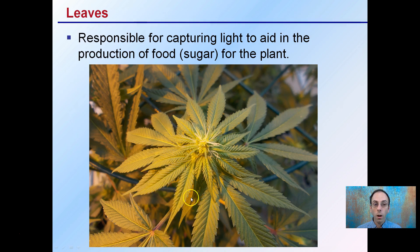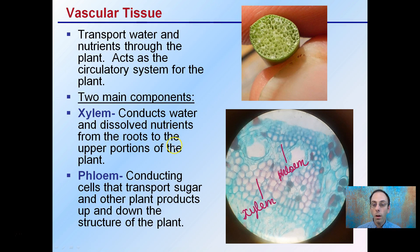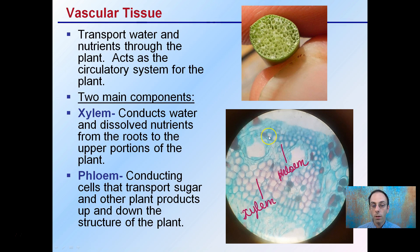The leaf structures are responsible for capturing light to aid in the production of food or sugars in the plant. You can see a nice leaf structure in a pretty dense canopy. Supporting those leaves, we have vascular tissue that occurs in the stems and also the leaves — they transport water and nutrients through the plant and act as a circulatory system. There are two main components highlighted here: xylem, which is more interior and conducts water and dissolved nutrients from the roots upward, and phloem, which transports sugar and other plant products up and down the plant.